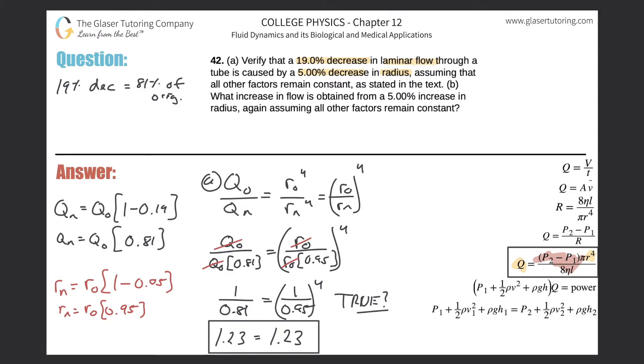And now it says letter B, what increase in flow is obtained from a 5% increase in the radius? Again, assuming all other things remain constant. So we got a 5% increase in the radius. Now this is a percent increase.